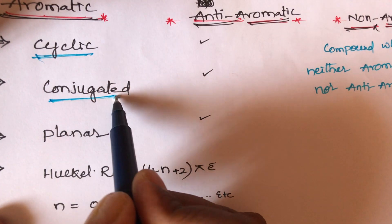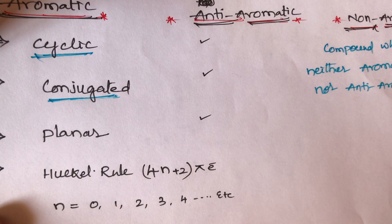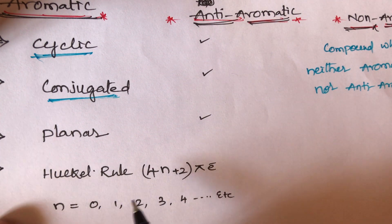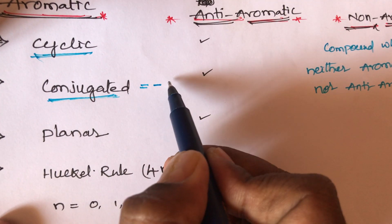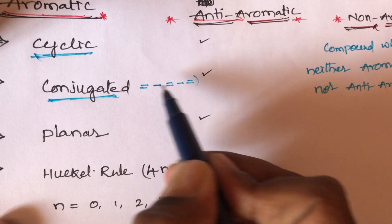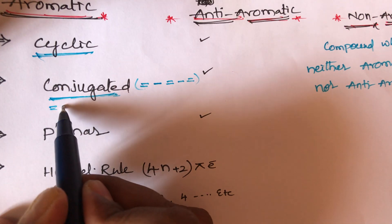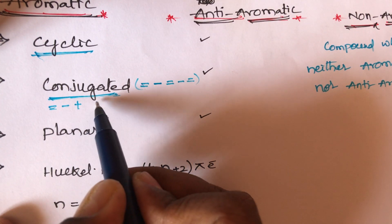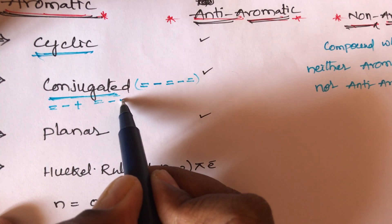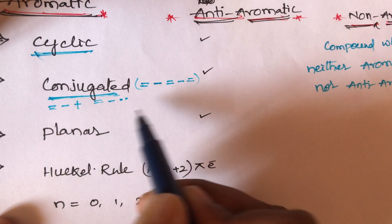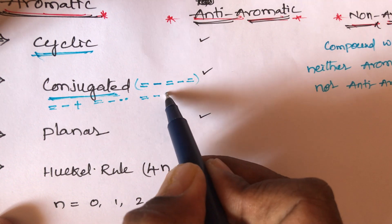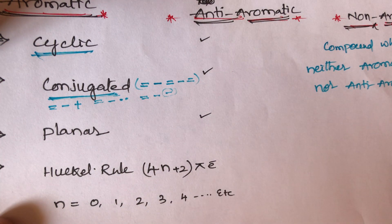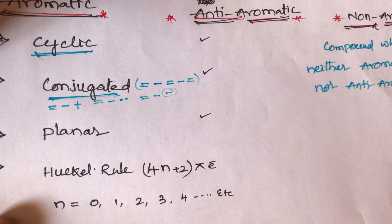The second condition is that the compound must be conjugated. Conjugation means alternating bonds: double bond, then single bond, then double bond, then single bond. Also, double bond then single bond then positive charge is conjugation, and double bond then single bond then lone pair is also conjugation. This alternating pattern is also called resonance.